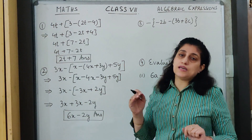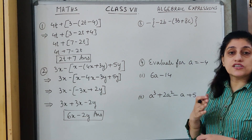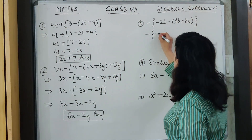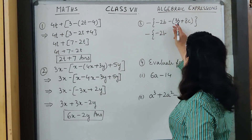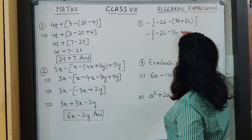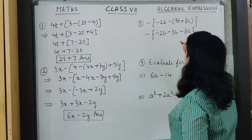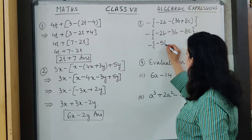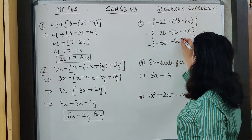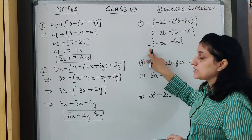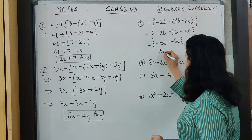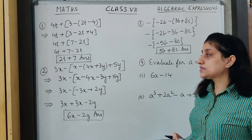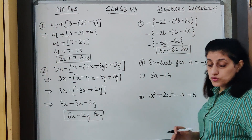This is how simplification is done. We have to stay calm — step by step we take all the terms and we reach our answer. In the next example: minus sign outside the bracket, curly bracket, minus 2b. Opening this bracket, there is a minus sign, so minus plus minus 3b minus 8c. Both terms are minus so they are added — sign remains minus: minus 5b minus 8c. Opening the last bracket, minus sign outside means inside signs change. So the answer is 5b plus 8c.